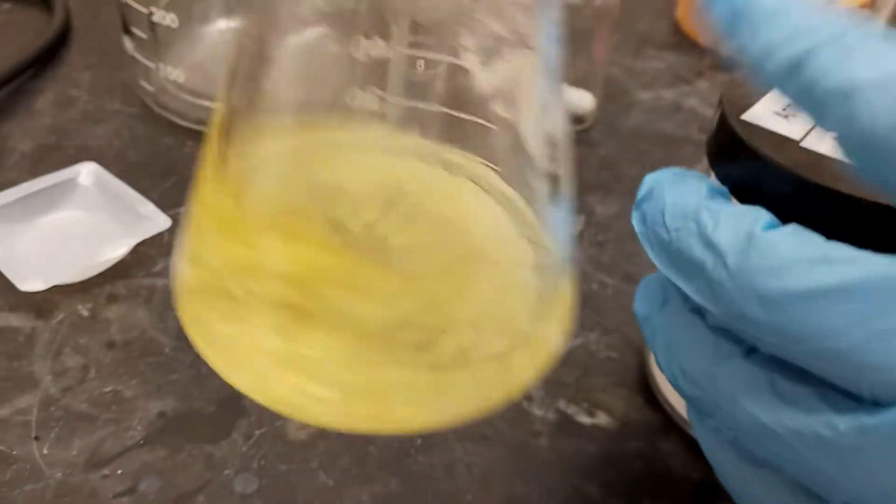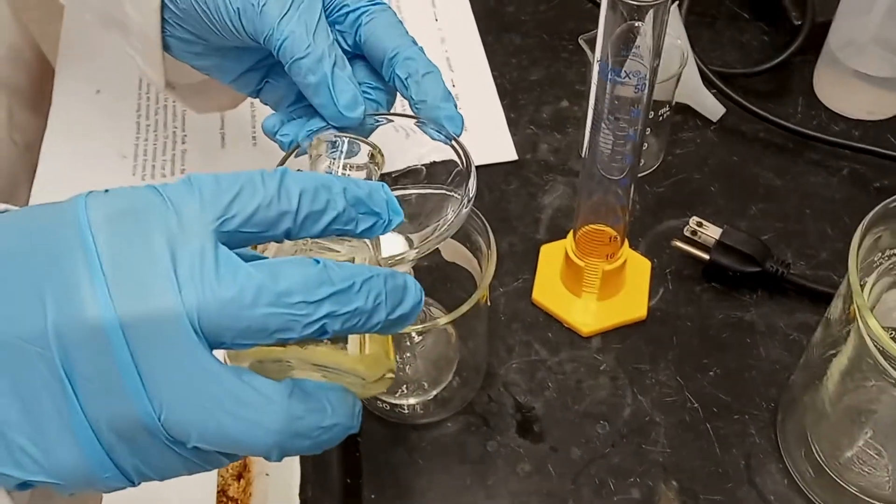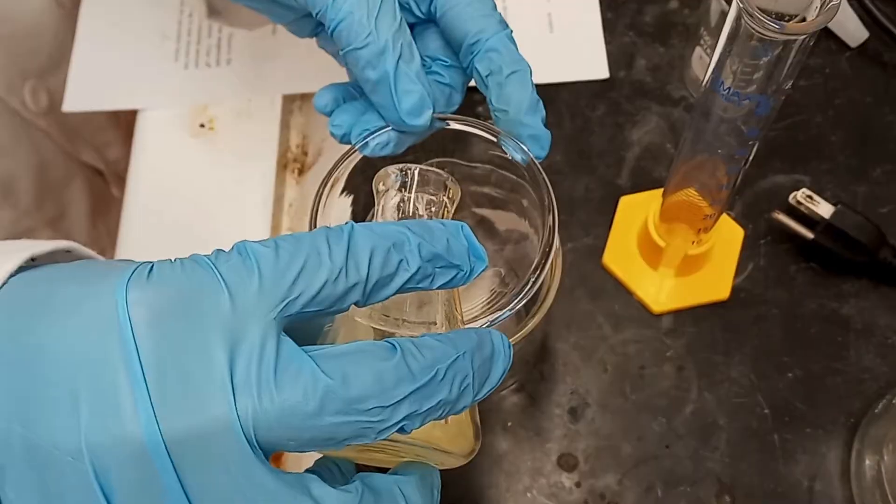Afterwards, we filtered off the drying agent by pouring the mixture through a glass funnel plugged with a piece of cotton into a 50 ml round-bottom flask and rinsed with a little bit of DCM.